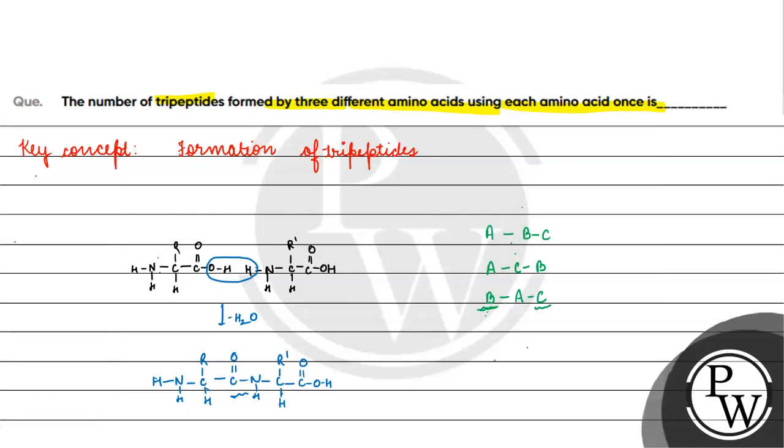फिर एक और possibility कि B का N-terminal हो, बीच में C हो, फिर A का C-terminal हो। Peptide बन गया है, tripeptide.